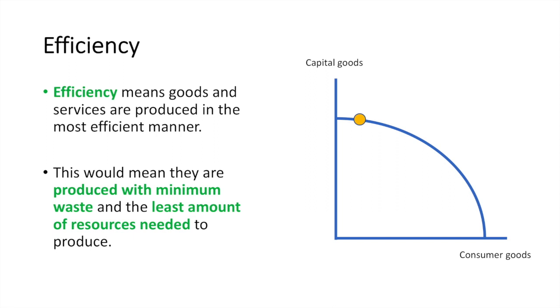If we look at a production possibilities curve, any points along the curve are considered to be productively efficient. One of these points would be allocatively efficient as well, dependent upon society's wants.